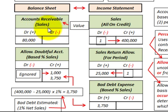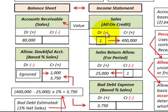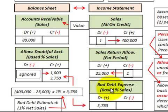The two methods are either a percentage of accounts receivable or a percentage of sales on the income statement. We're going to be using the allowance method. Accounts receivable will be reduced through an allowance for doubtful accounts as a contra account, and our bad debt expense is also going to be a contra account to our sales account.